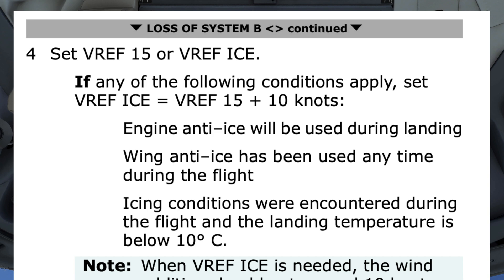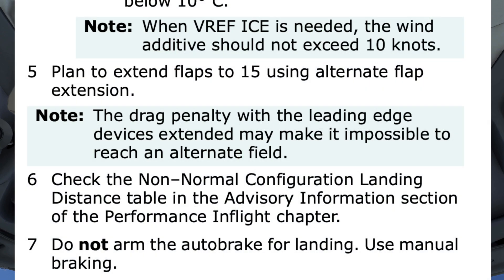Wing anti-ice has been used any time during the flight — we haven't used it. Icing conditions were encountered during the flight and the landing temperature is below 10 degrees Celsius — that doesn't apply. Note: when VREF ice is needed — it's not. Step 5: Plan to extend flaps to 15 using alternate flap extension. Note: the drag penalty with the leading edge devices extended may make it impossible to reach an alternate field.